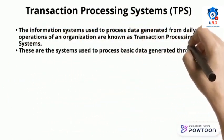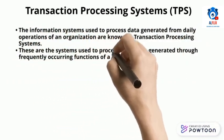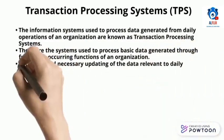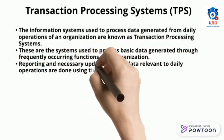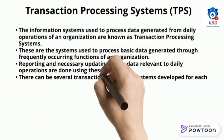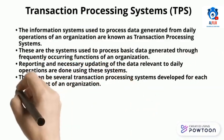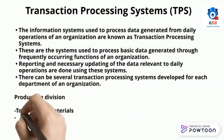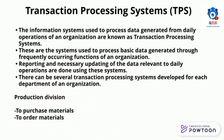Transaction processing systems are the information systems used to process data generated from the daily operations of an organization. These are systems used to process basic data generated through frequently occurring functions of an organization. Reporting and necessary updating of data relevant to daily operations are done using these systems. There can be several transaction processing systems developed for each department of an organization.